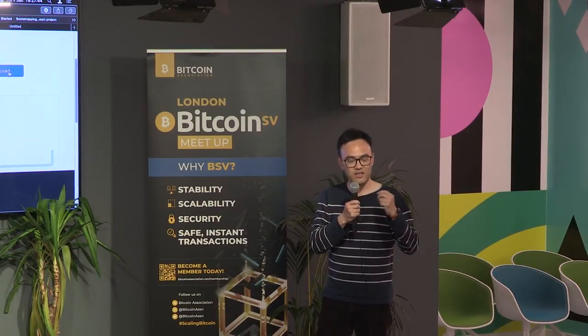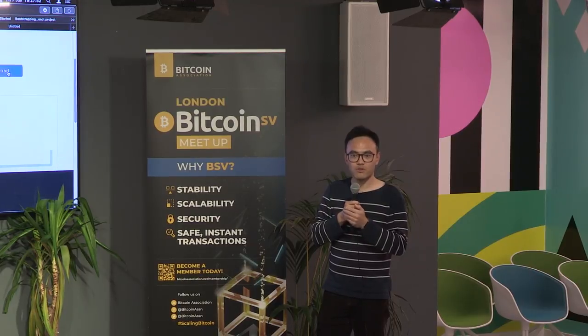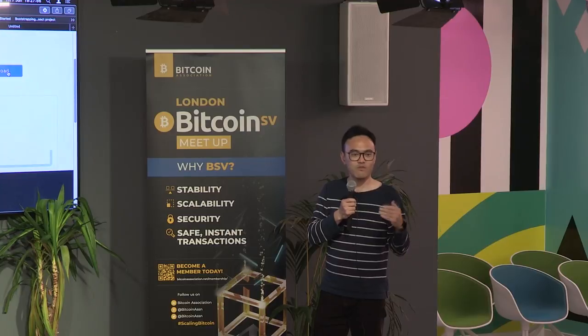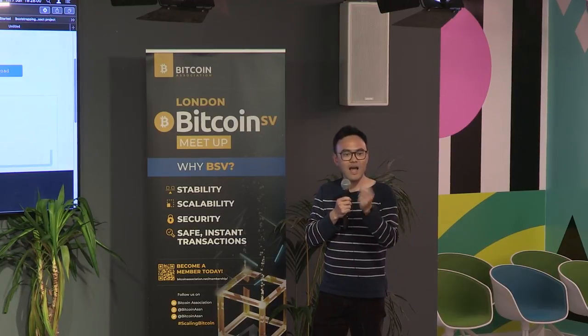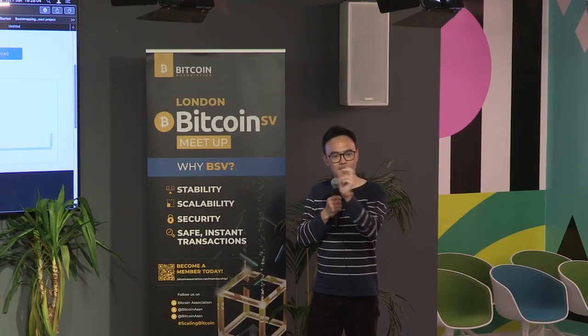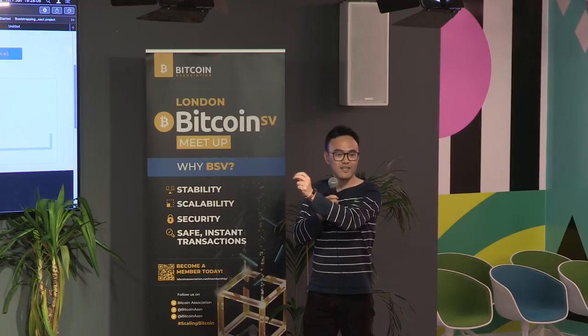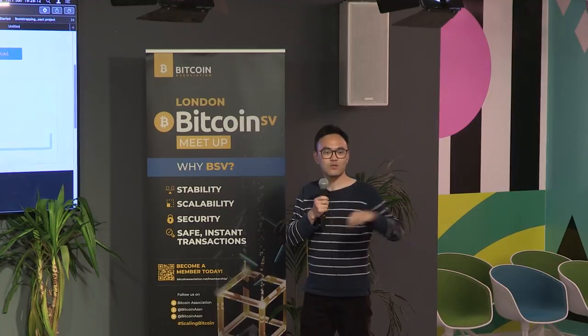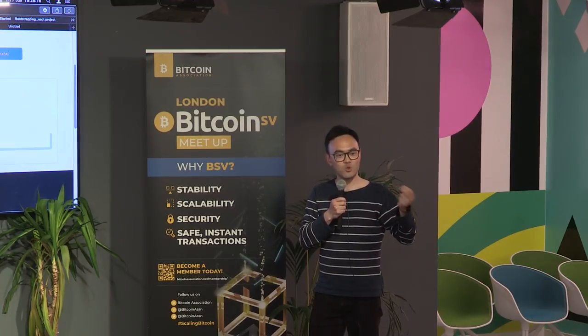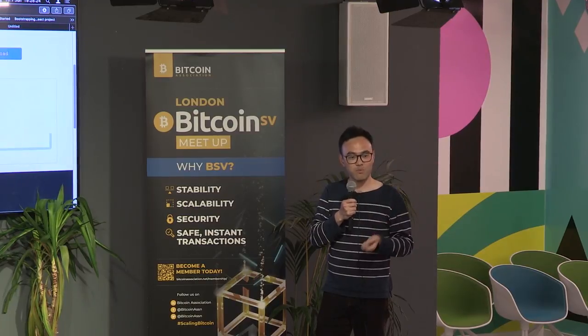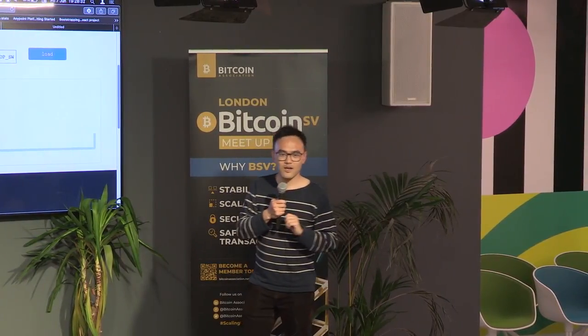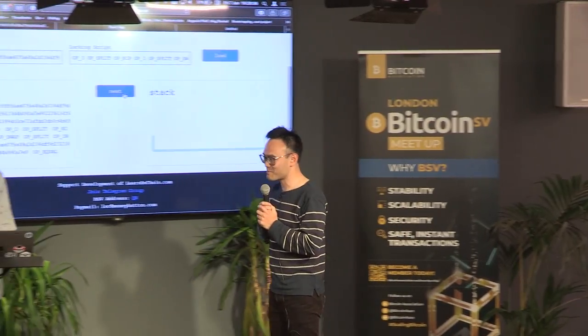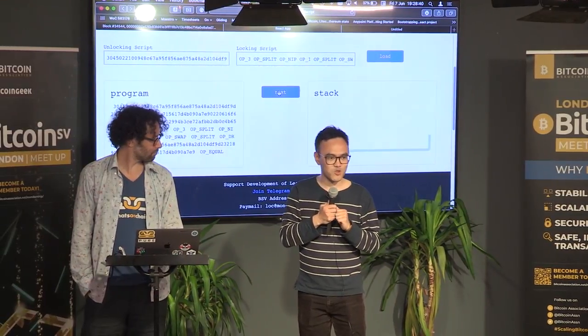For example, a math professor creates a problem set — whoever solves it first can claim 1 BTC. The professor hashes the solution to derive K, works out R, and publishes hash of R on chain. The student works out the solution, derives K, creates a signature using that ephemeral key and any public key — possibly their identity key to prove to the professor they solved it. We've thought of at least 10 such applications and written a white paper on them.